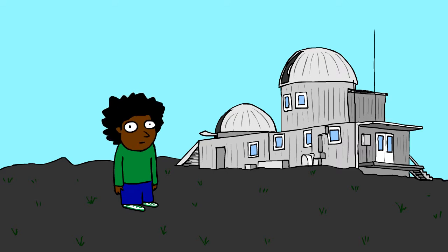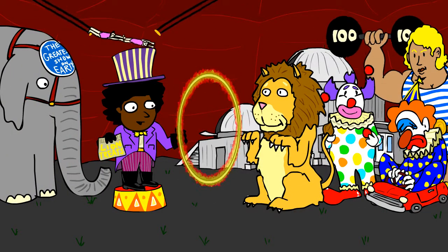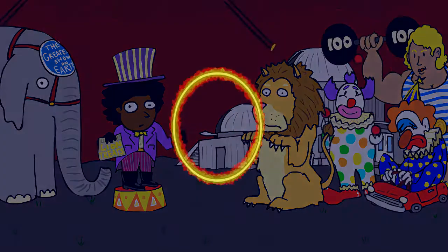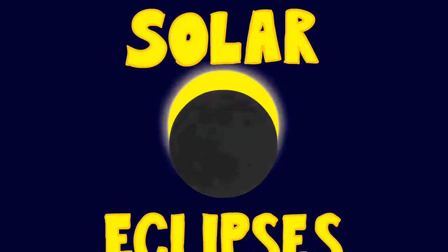The High Altitude Observatory has been studying the greatest show on Earth for over three-quarters of a century. Not that kind. This show happens on an astronomical scale. Yes, we're talking about solar eclipses.